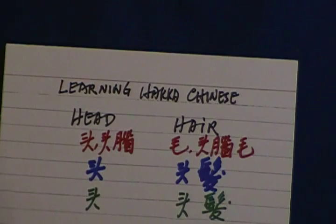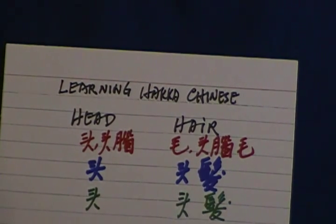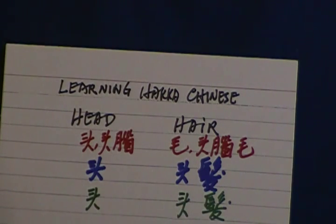Head. Head in Hakka Chinese is teo or teo lao. Teo or teo lao. And in Mandarin is tou. And in Shanghai dialect is de.